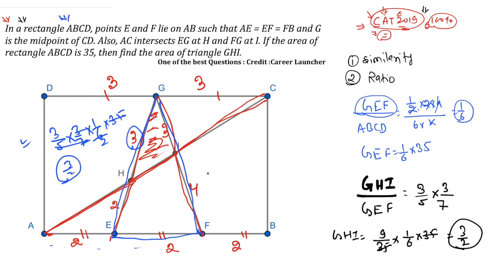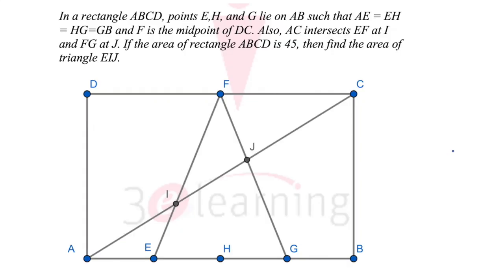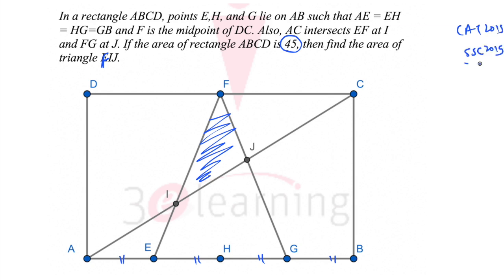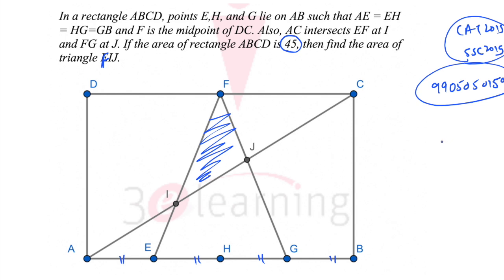I hope this is clear. If you have any doubt, ping me on Facebook or in the YouTube comments. Now here is your homework: it is based on almost the same concept with more points. AE = EH = HG = GB, and the area of ABC is 45 — find the area of triangle FIJ. Please comment your answer. To join CAT 2019 or SSC 2019, visit www.3learning.co.in or call 9905050159. God bless you, happy learning, and bye!